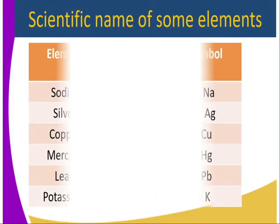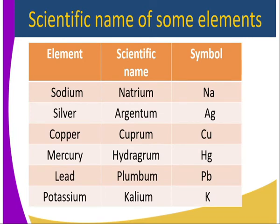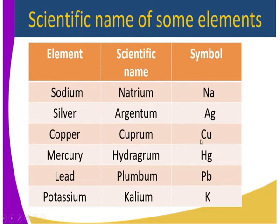Some elements have scientific names from which their symbols are derived. For instance, sodium's scientific name is natrium, giving us the symbol Na. Silver is argentum, copper is cuprum giving us Cu, mercury is hydrargyrum, lead is plumbum, and potassium is kalium. From these scientific names we get the chemical symbols for these elements.